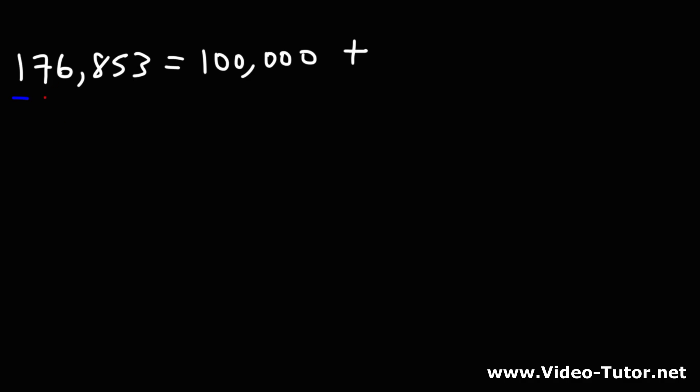The 7 is in the 10,000th place, so 7 times 10,000 is 70,000. The 6 is in the thousands place, so it has a value of 6,000. Next we have plus 800, and then plus 50, and plus 3.